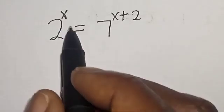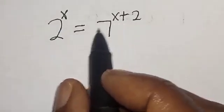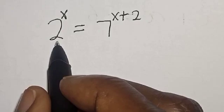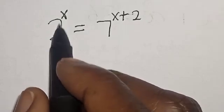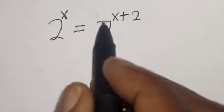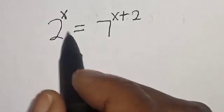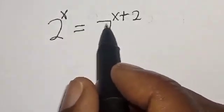2 raised to power s is equal to 7 raised to power s plus 2. Hi everyone, welcome to my class. In this class, we want to find the value of s from this given equation: 2 raised to power s is equal to 7 raised to power s plus 2.